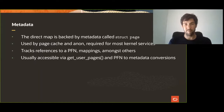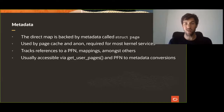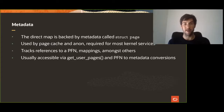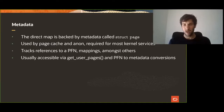With respect to this direct map, I would like to highlight one particular metadata structure which is going to be the source of most of this talk. The data structure design is largely driven by the needs of page caching and anonymous memory. It's also a structure used by most kernel services in the most granular way of tracking memory. The purpose of the data structure is to track references to PFNs alongside file mappings and other subsystem-specific data.